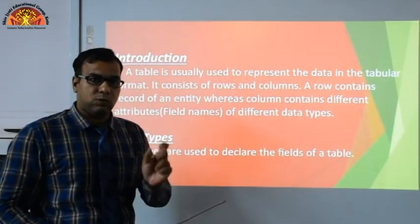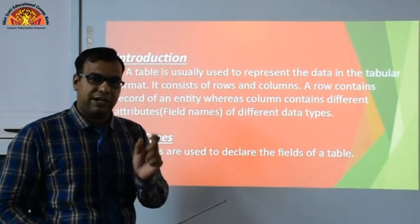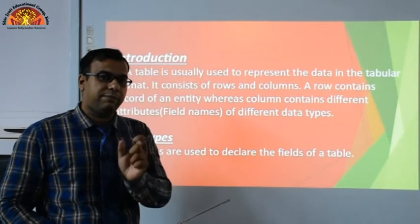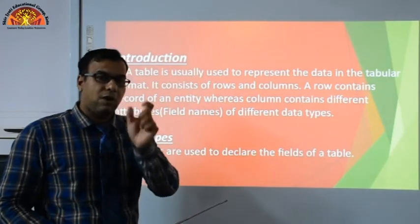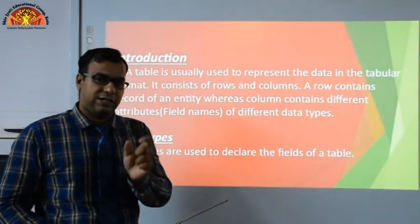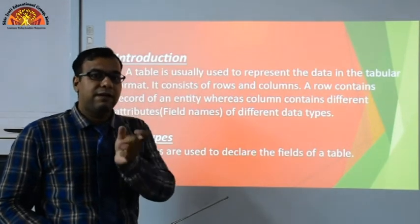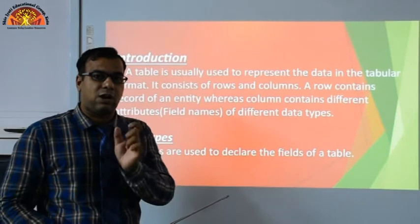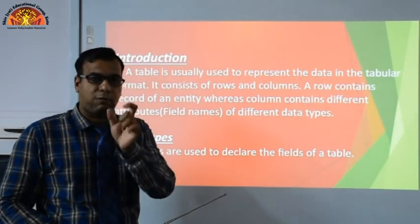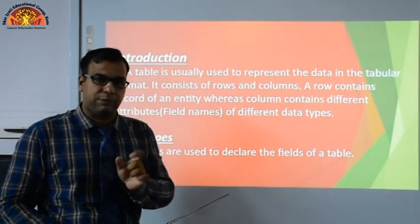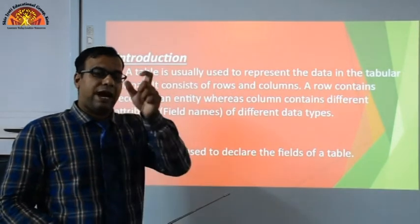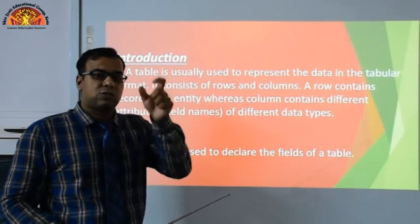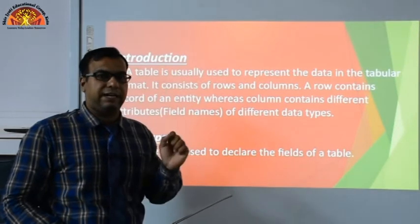For example, roll number is an attribute name, name is a column name, and marks is also a column name — these are all attributes. Attributes and column names store the same type of data. In a column, the data type is the same, but in rows, the data is different for each record.